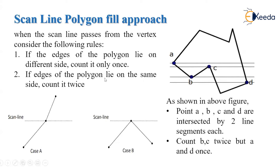To illustrate these rules, consider a figure with four vertex points: A, B, C, and D. Point A follows rule 1 because the edges of the polygon lie on different sides of point A, so we count it only once. Similarly, point D has edges on two different sides of the scanline, so we also count it once. For points B and C, the edges of the polygon lie on the same side of the vertex, so we count them twice.